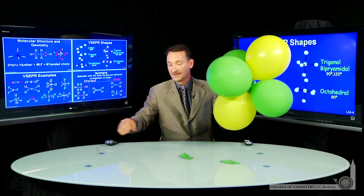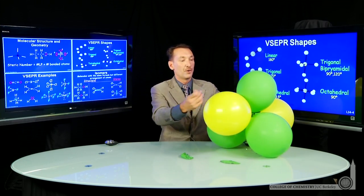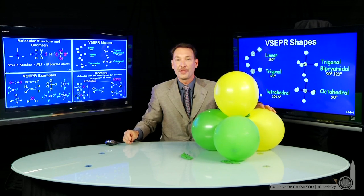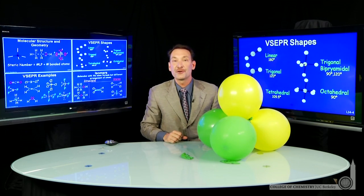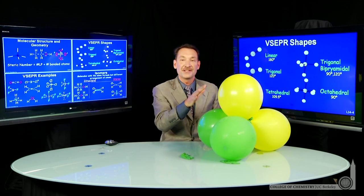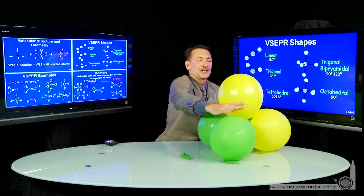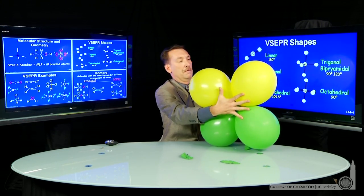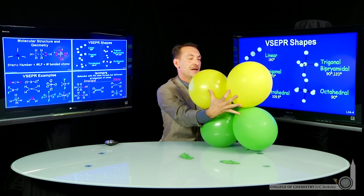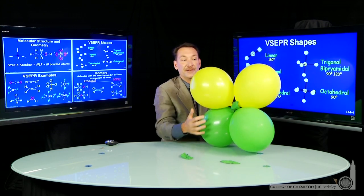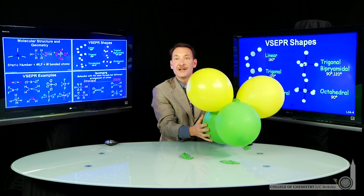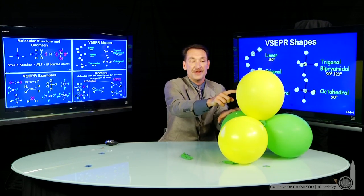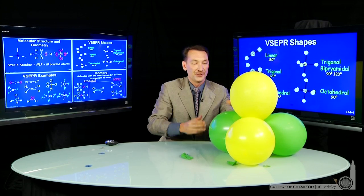Let's go down to four things. We'll lose one more of our balloons. Four things. Now here's a tetrahedral shape. Notice that these four things don't naturally arrange themselves as a square plane. I could probably force them into a square plane configuration, but I have to hold them there. If you give this any freedom, it naturally arranges itself in a tetrahedral shape,